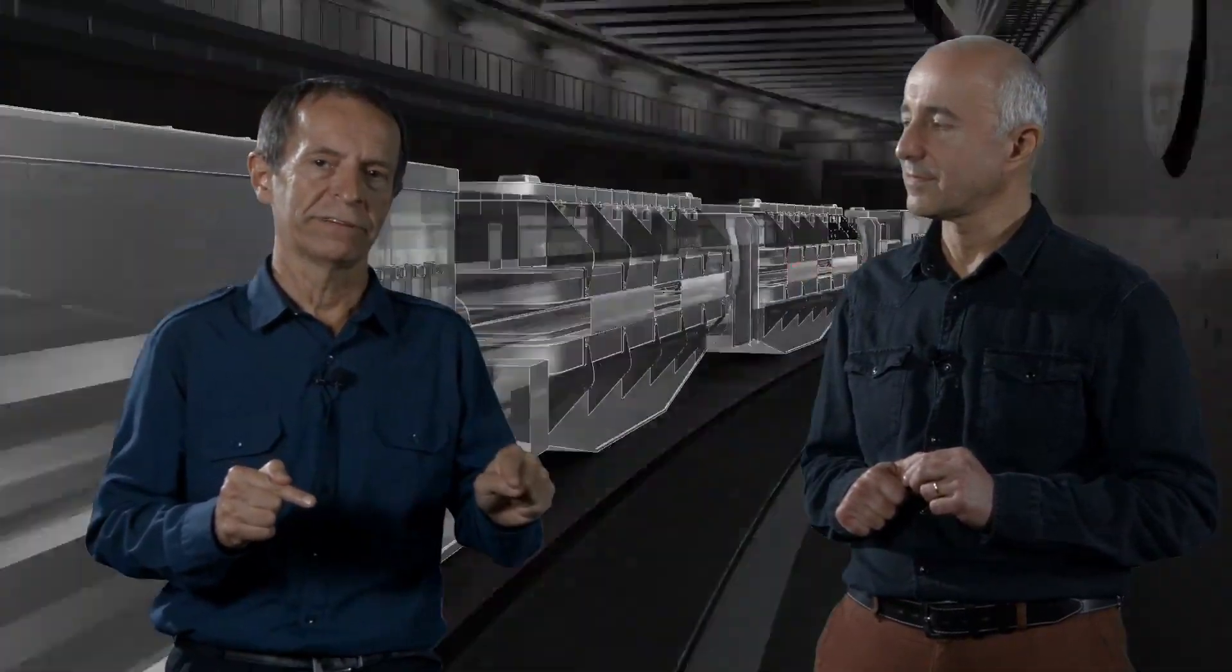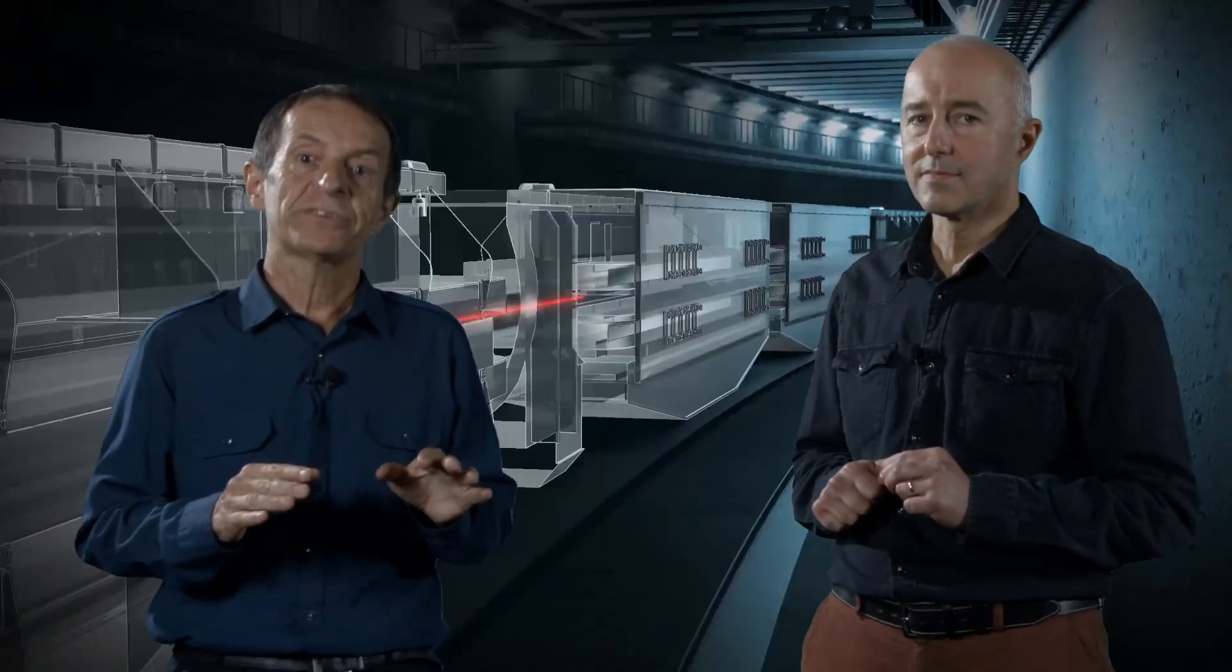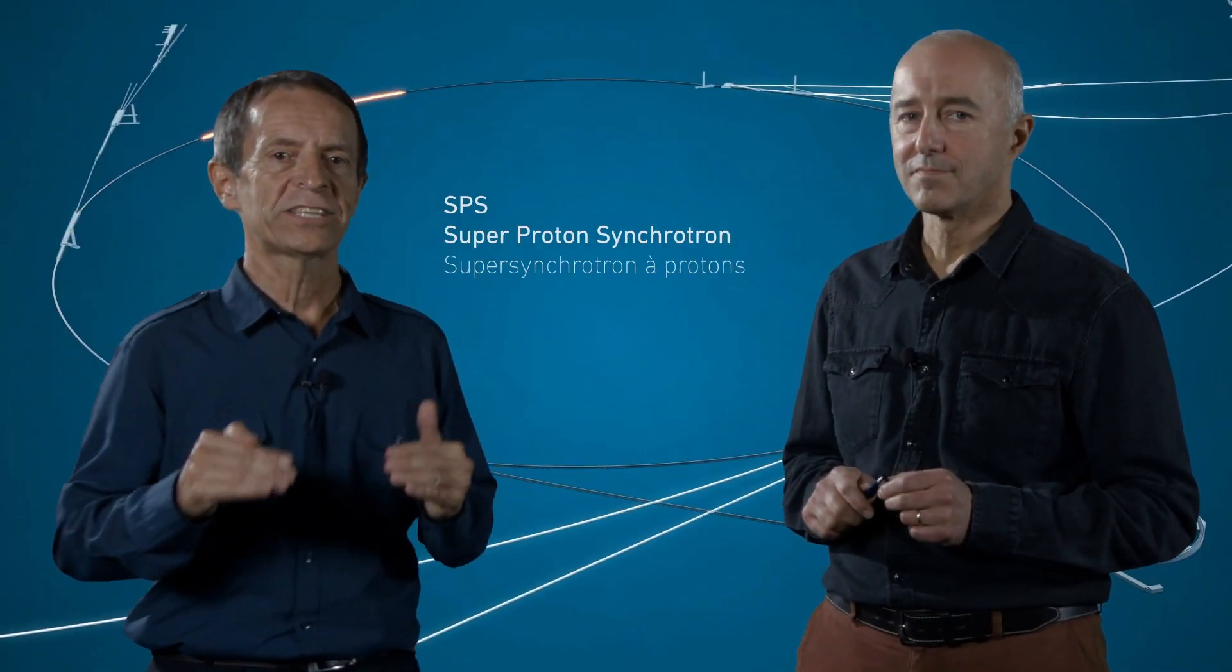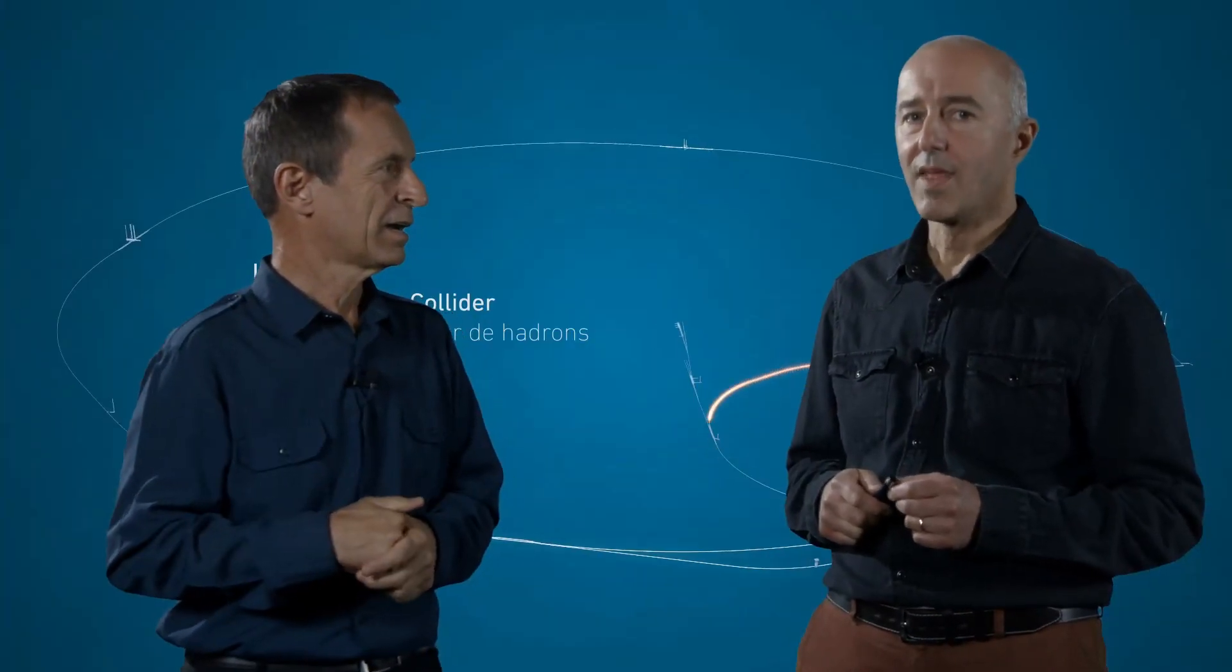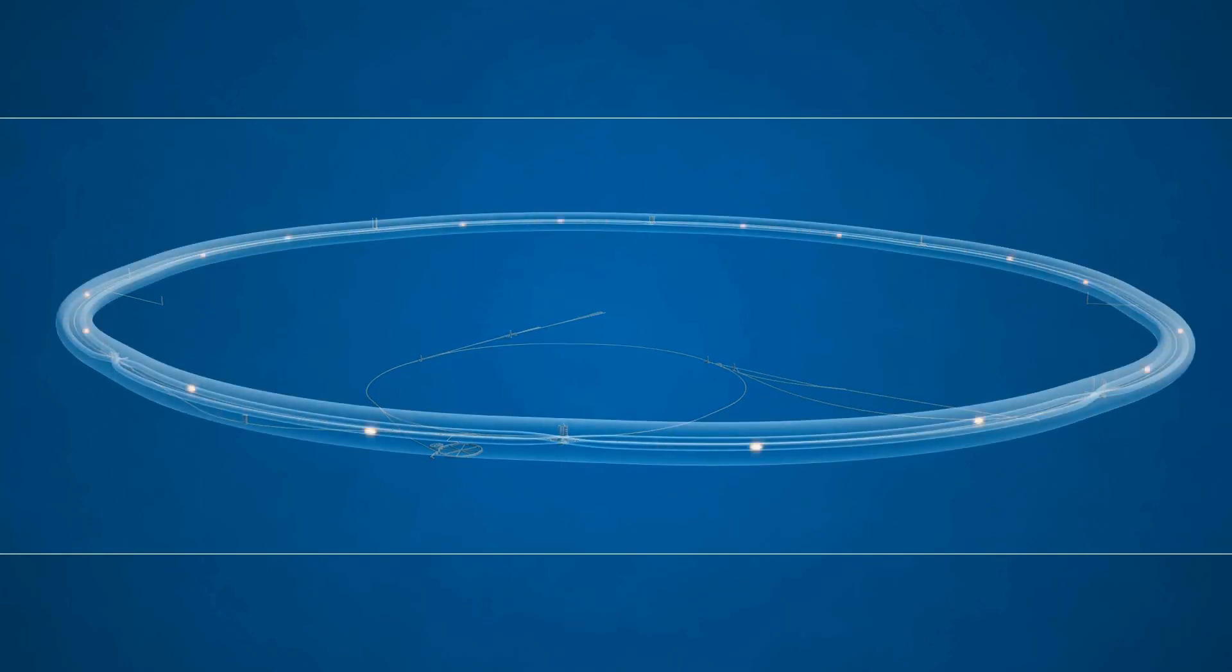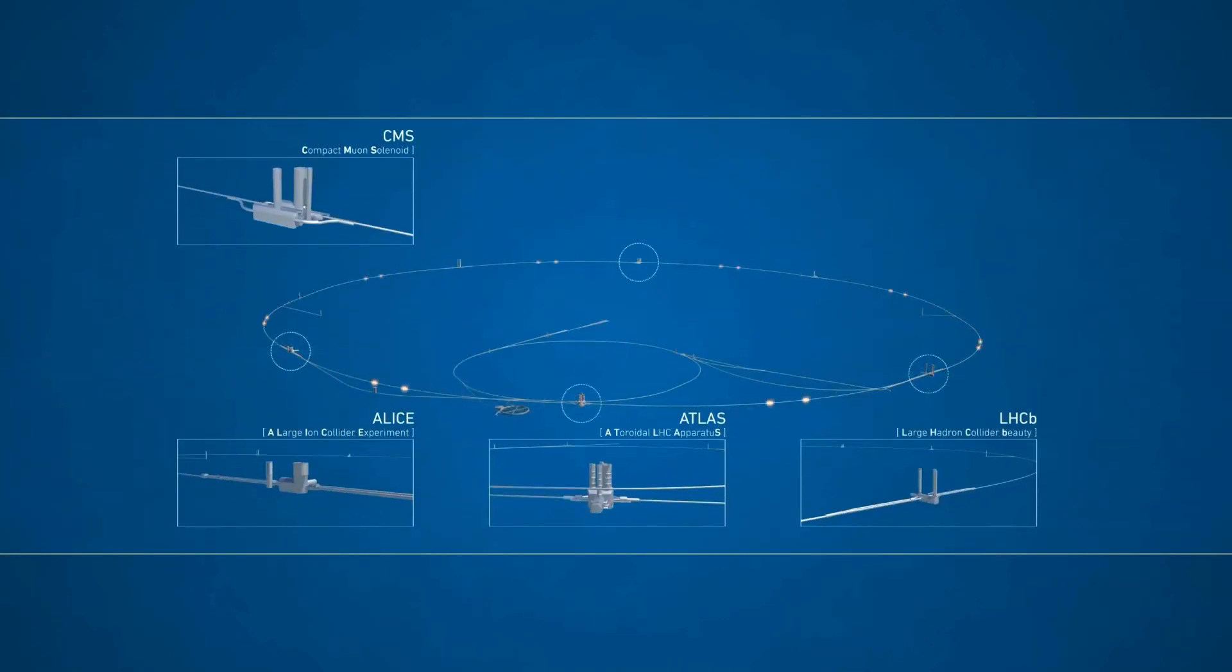CERN założono w latach 50. XX wieku z myślą o badaniach w dziedzinie fizyki jądrowej. Ale z czasem wyrosła z nich fizyka cząstek elementarnych. Jest to wielkie, międzynarodowe laboratorium fizyki cząstek. A więc to również polskie laboratorium, tak samo jak francuskie, niemieckie czy włoskie. Co zatem my tam robimy? Współtworzymy największe urządzenia badawcze, jakie ludzkość stworzyła – akceleratory i detektory cząstek.